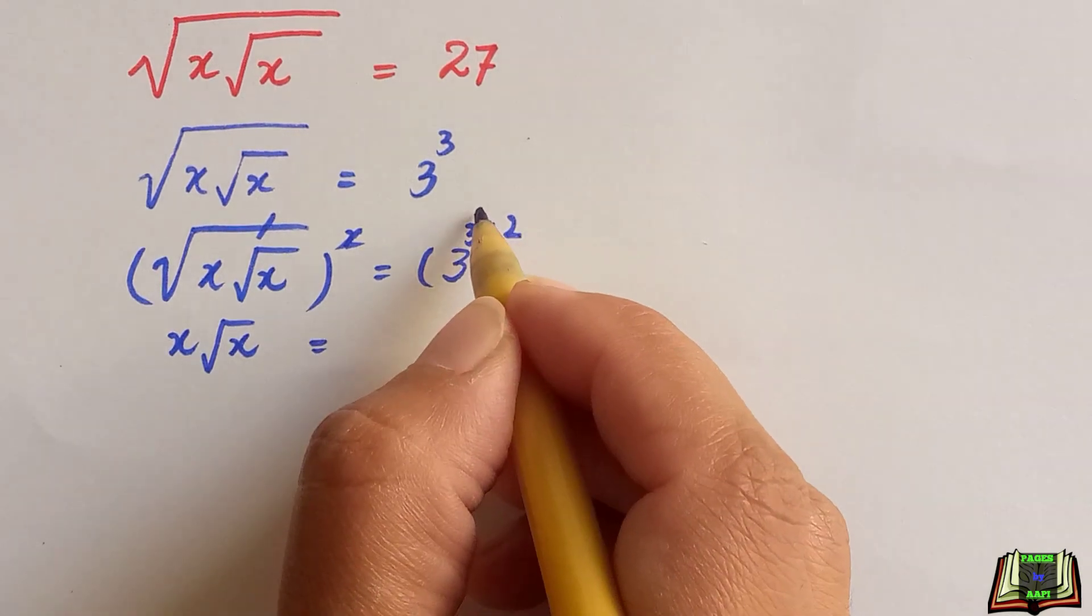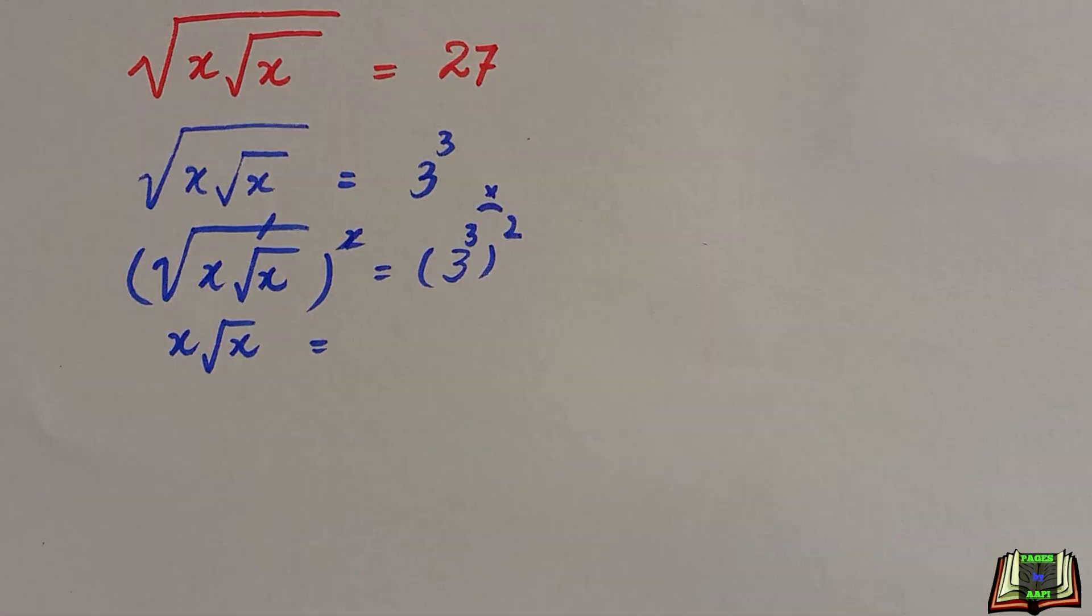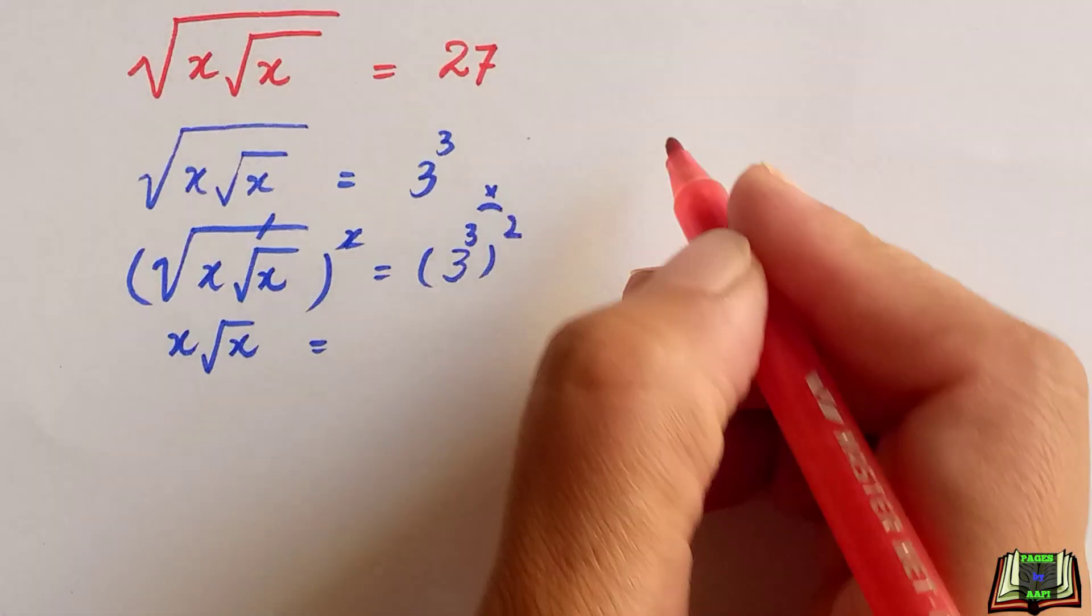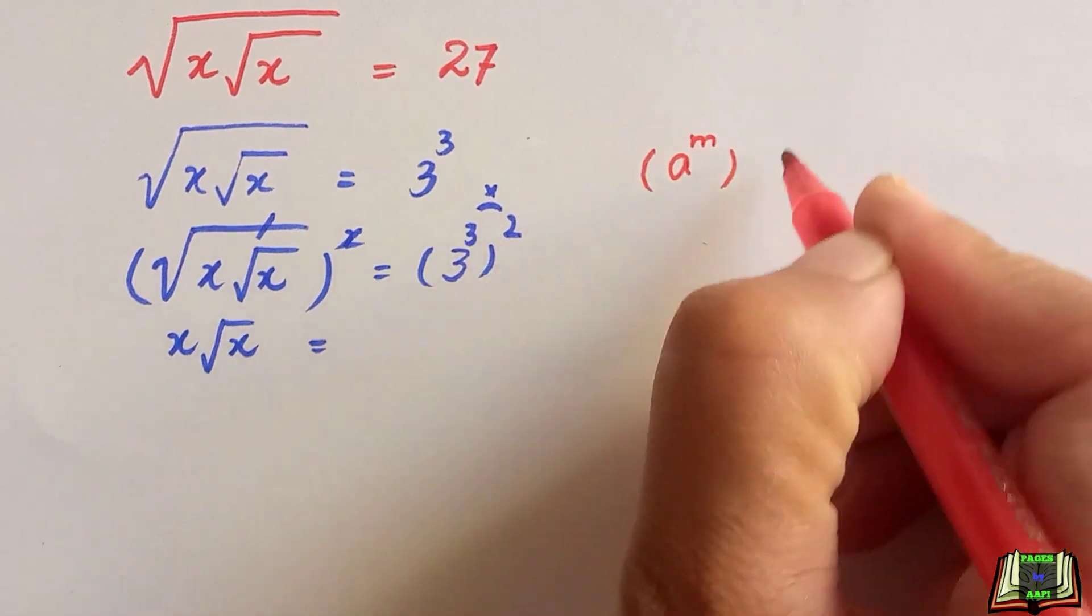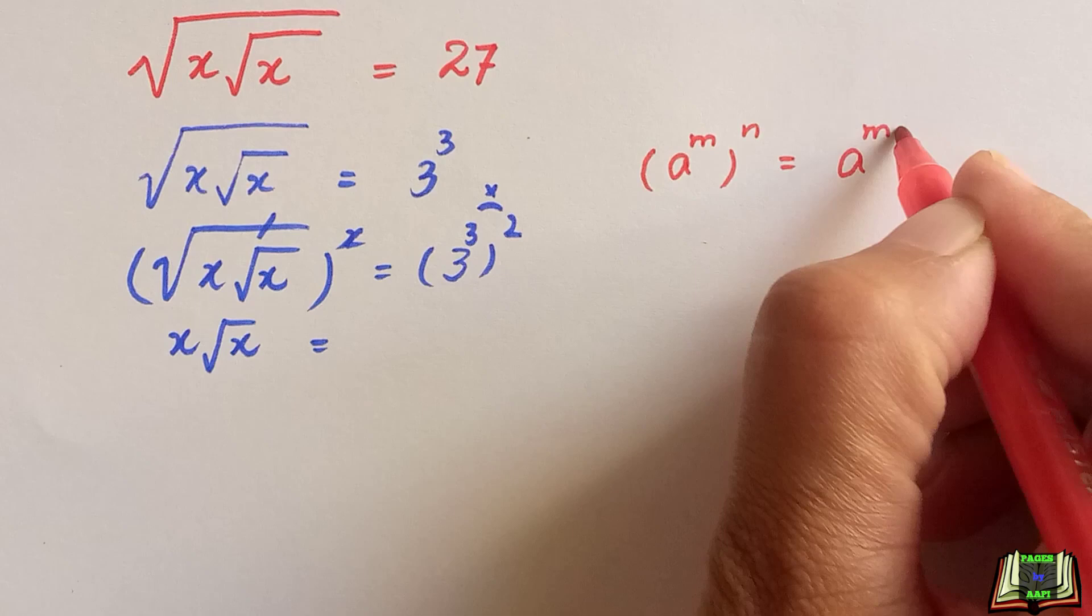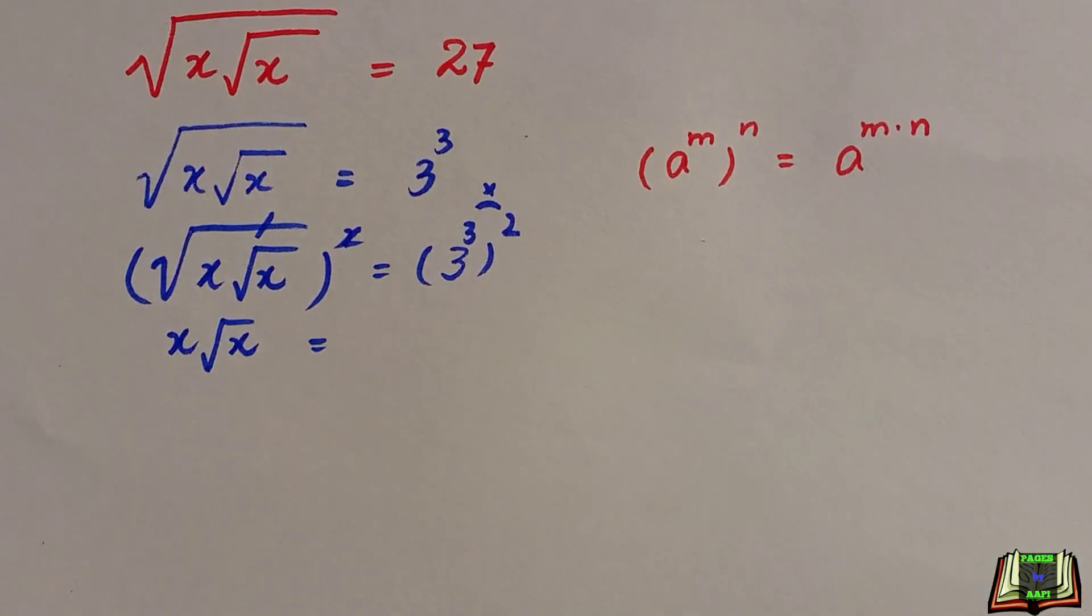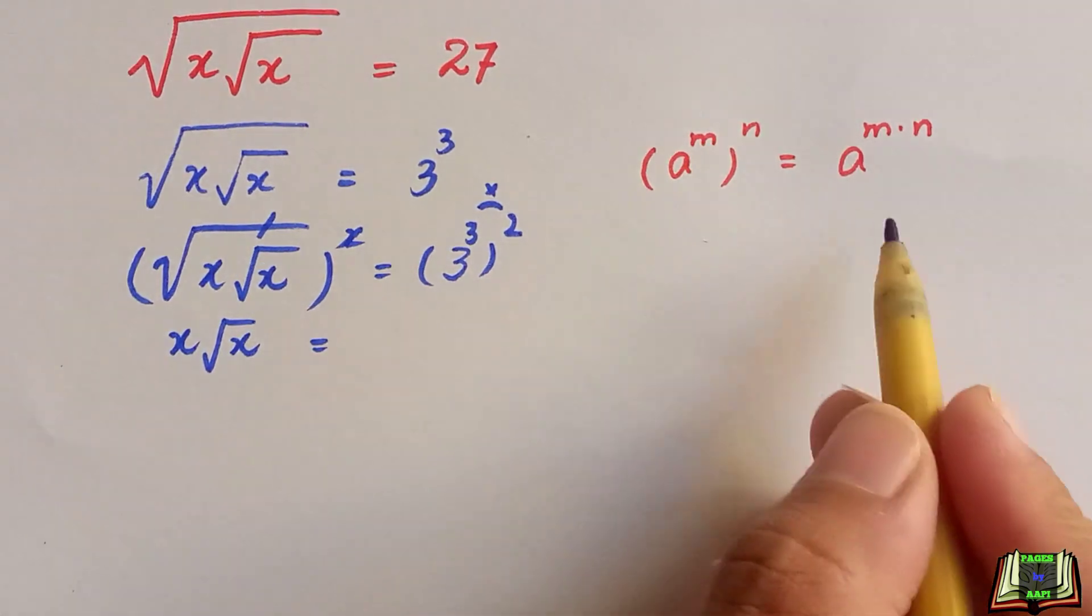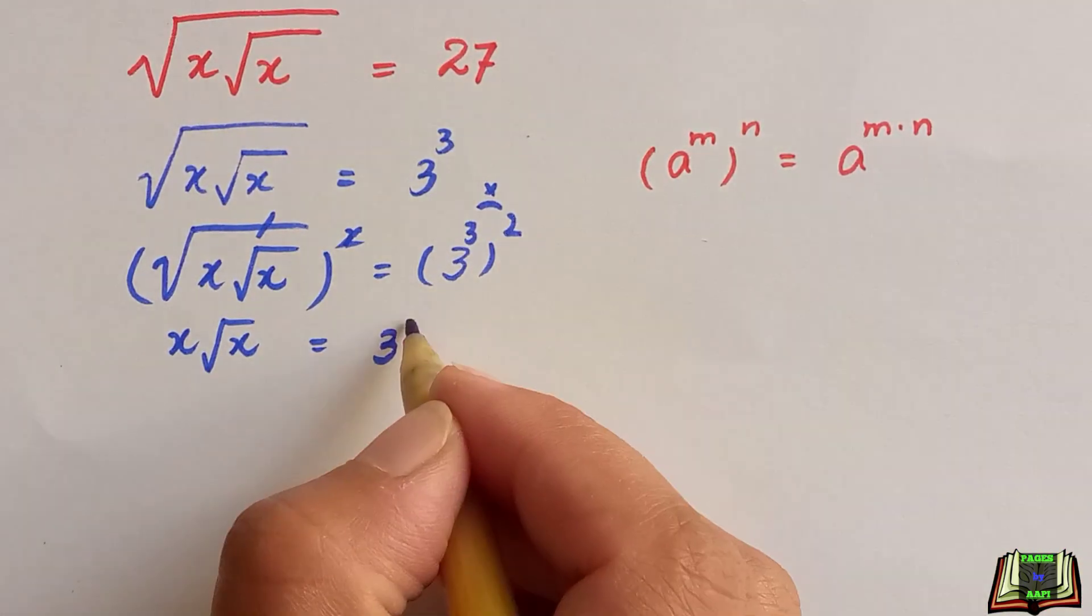These two powers are going to be multiplied because we are going to use the power of a power rule. That power rule says if a raised to power m raised to power n, then we can write it as a raised to power m times n. So this can be written as 3 raised to power 3 times 2 is 6.